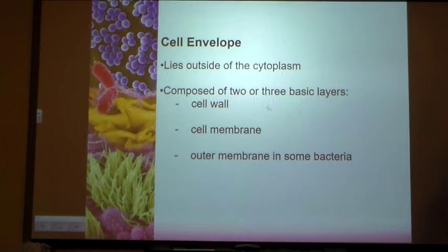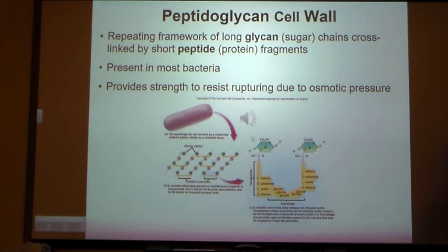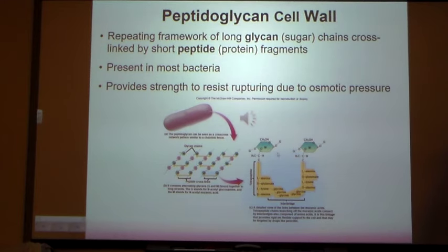Now I will quickly talk about the bacterial cell wall, which is very important. The bacterial cell wall contains a material called peptidoglycan. You don't need to know the exact chemical structure, but as you can see, it has amino acids and sugars. The sugars are called N-acetylglucosamine and N-acetylmuramic acid — those are the two types of sugar.